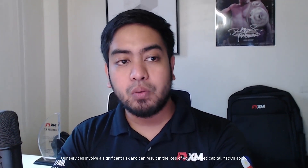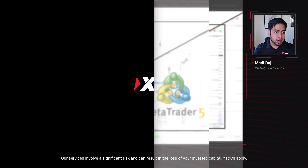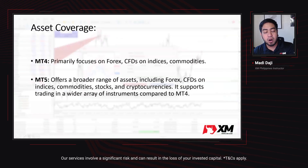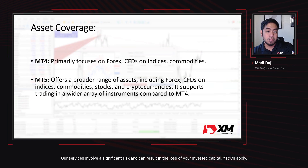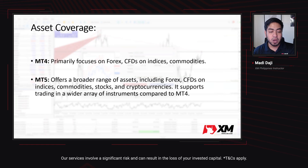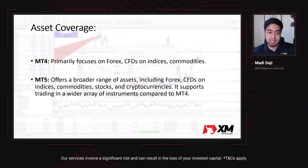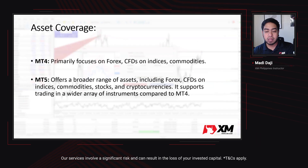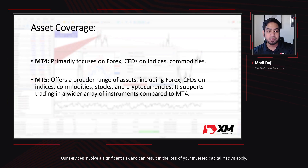Let us start first with the asset coverage. In MT4, it primarily focuses on the Forex market, as well as indices and commodities — commodities like precious metals such as gold, silver, and energies. While for MT5, it offers a broader range of assets including Forex, indices, commodities, the stock market, and even the cryptocurrency market. It also supports trading in a wider array of instruments compared to MT4.